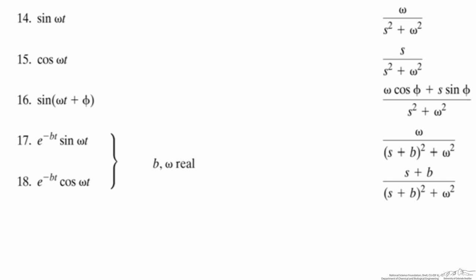Looking at the transforms provided here, what you'll see is the fact that there are no i terms here, and the fact that everything is left in s squared plus omega squared, or s plus b squared plus omega squared.